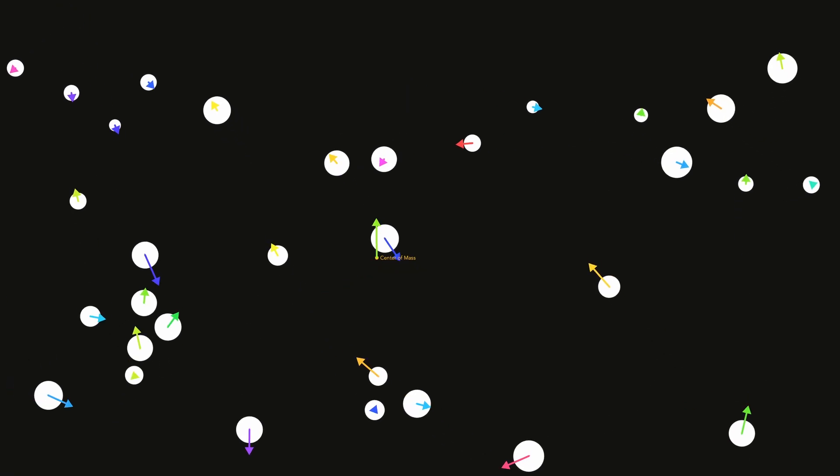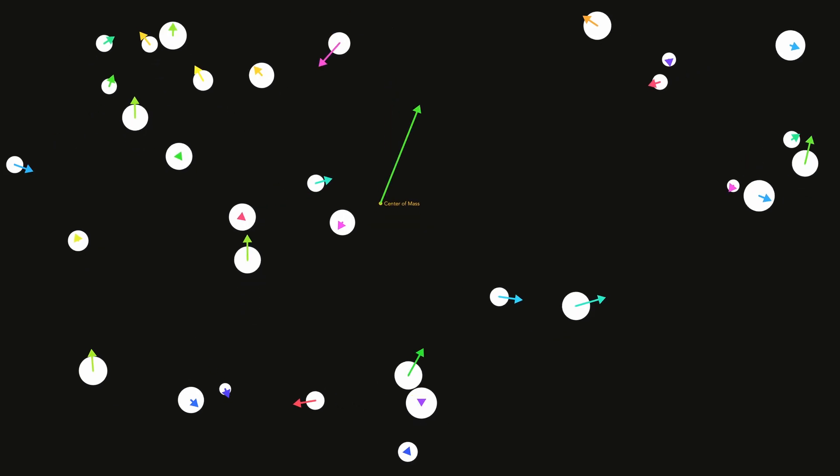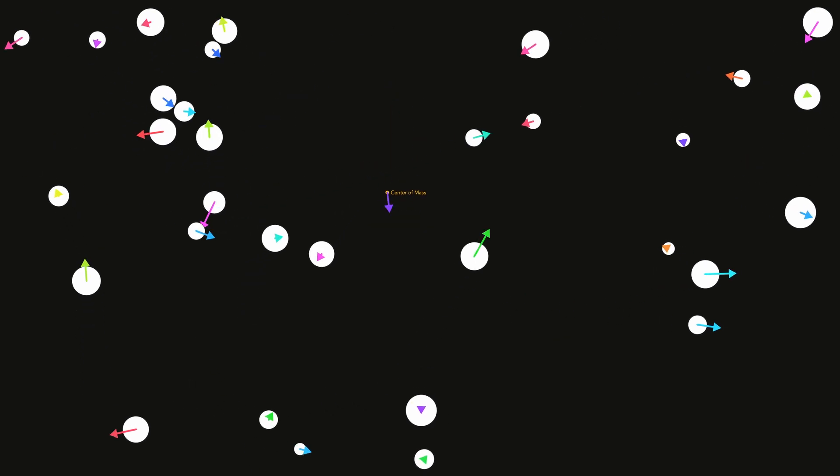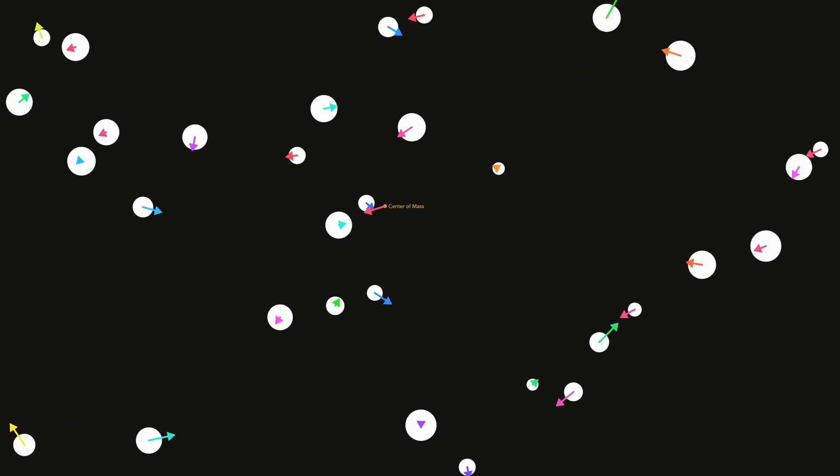In the last unit, we learned about momentum, which describes the amount of movement in a system as a vector with some direction and strength. It's great for thinking about the average movement over all the objects, but there's some things it doesn't capture. For example, we considered two identical objects traveling towards each other at the same speed and determined the system's net momentum is zero. And yet, movement and counter-movement still occurred.